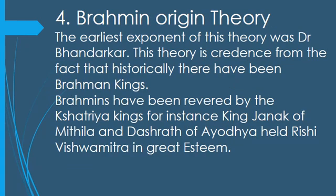The next theory is the Brahman origin theory. The earliest exponent of this theory was Dr. Bhandarkar. This theory gains credence from the fact that historically there have been Brahman kings. Brahmins have been revered by Kshatriya kings — for instance King Janak of Mithila and Dashrath of Ayodhya held Rishi Vishwamitra in great esteem. It is known that the Pratiharas of Mandor were Brahmin, descendants of Brahmin Harsh Charitra and Madra. The Pratiharas of Abu were descendants of Rishi Vashishtha. The ancient literary scripture Pingal Sutra states that the Rajputs were descendants of Brahmins. Modern historian Dr. Gopinath Sharma states that the Guhilots of Mewar, whose ancestor Guhiladitya was a Nagar Brahmin. Dr. G.H. Ojha also accepts that the Guhilots were descendants of Guhiladitya, a Nagar Brahmin, in his commentary on Geet Govind. This theory is not accepted by historians like Dashrath Sharma, and even the Rajputs reject it.